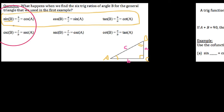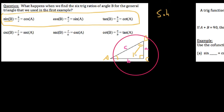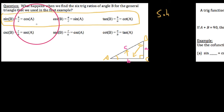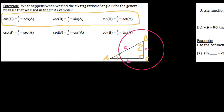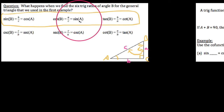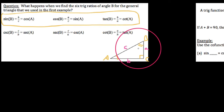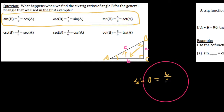For instance, when we say sine of angle B — sine is opposite over hypotenuse — I get b over c, because I took my opposite side over my hypotenuse side. Likewise, cosine of angle B would be adjacent over hypotenuse, so a over c.